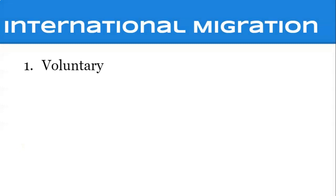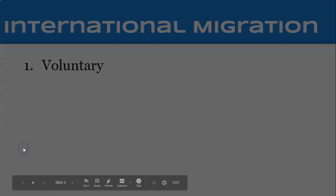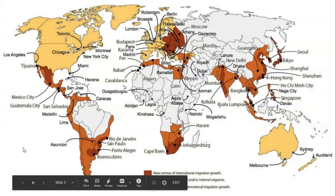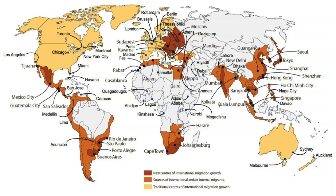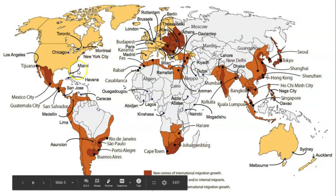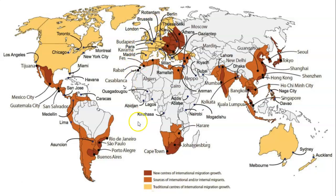Looking at international migration, there are two types. Most people fall under voluntary migration, meaning they're choosing to move from one location to another. Most people move for economic reasons — looking for a better or more stable job, or a place where their money will go further. If you look at the globe today, traditional destination areas for international migrants tend to be wealthier regions: North America, Western Europe, and Australia — places with higher GDPs and high demand for labor.